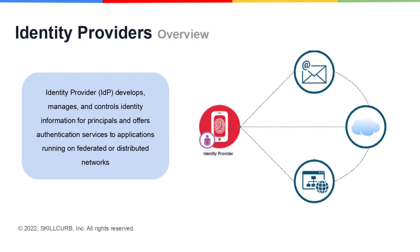A system entity known as an identity provider develops, manages, and controls identity information for principals and offers authentication services to applications running on federated or distributed networks. It is a dependable supplier of your user identification who enables you to access other services using authentication. Facebook, Amazon, Google, Twitter, GitHub, and LinkedIn are some examples of identity providers.